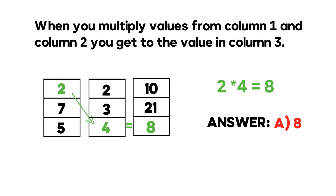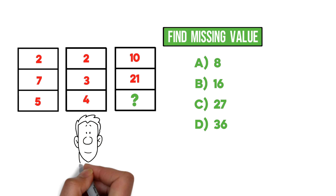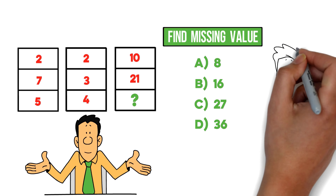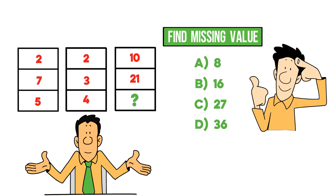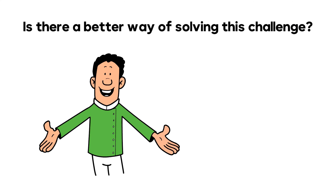One of the typical mistakes people make is looking only at individual columns. Unfortunately, there is no pattern just by looking at values in column 1 alone, column 2 alone, or column 3 alone. You have to look across columns and take a global view across multiple columns to get to the correct solution. If you have a better way of solving this challenge, please share your thought process in the comments.